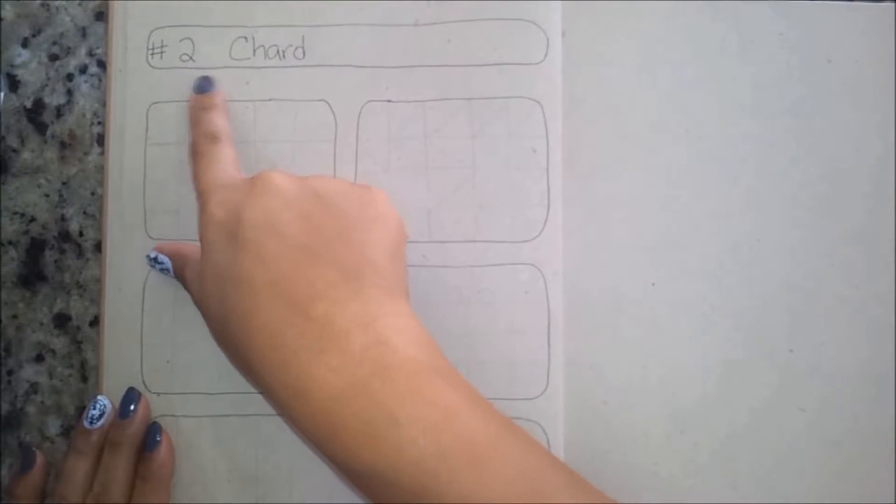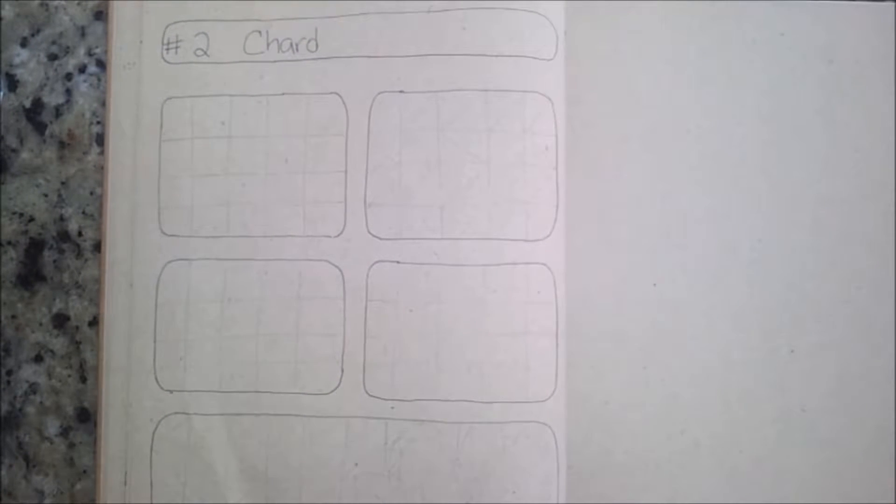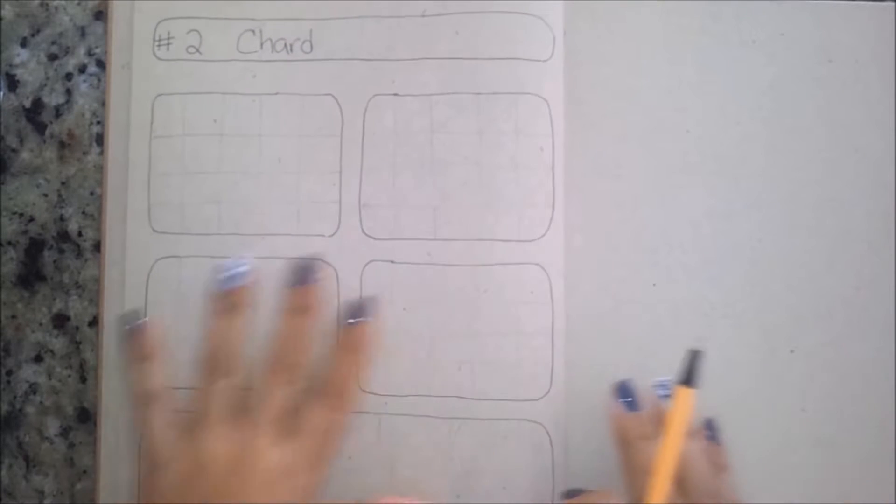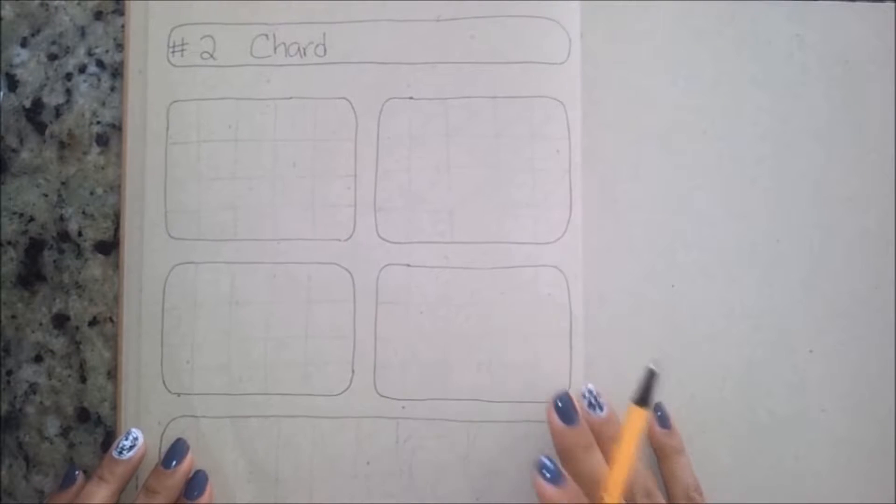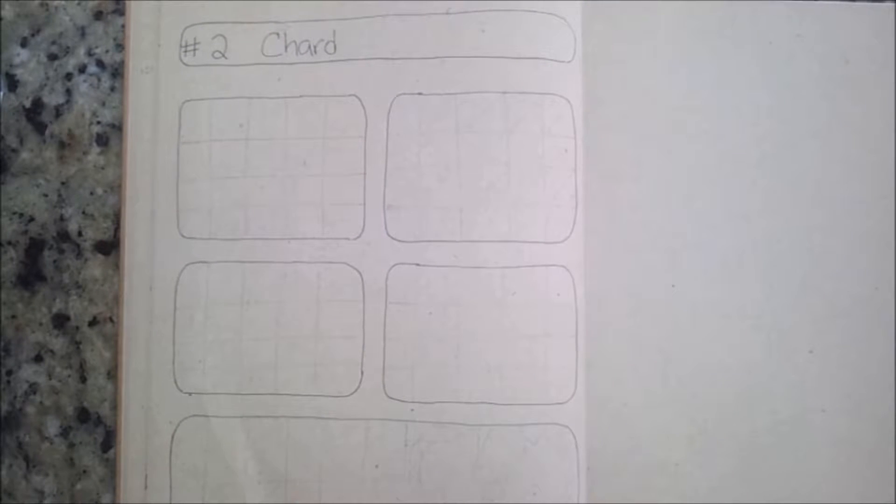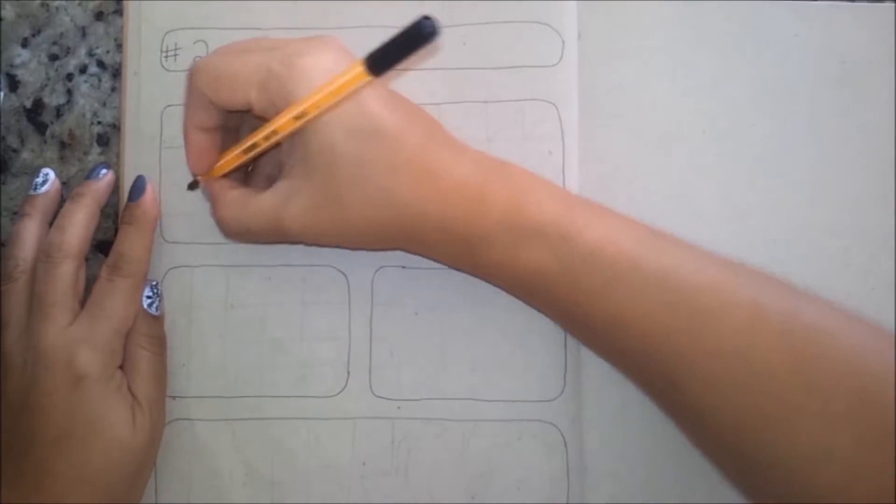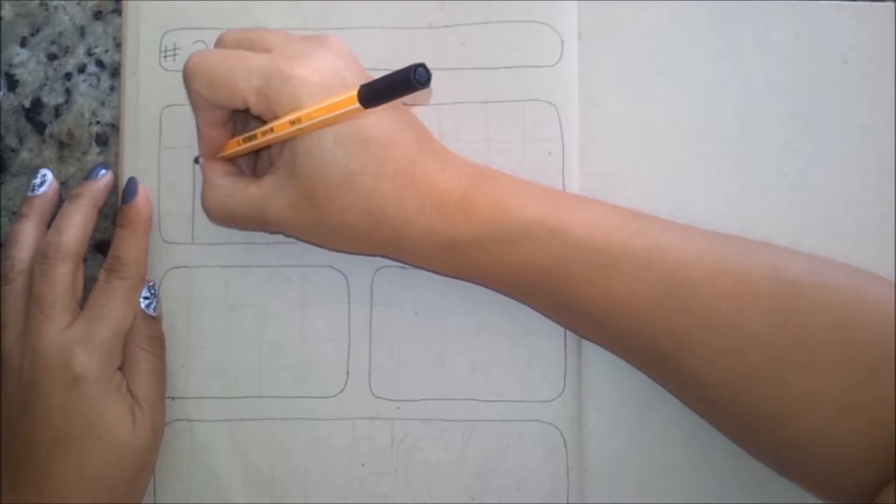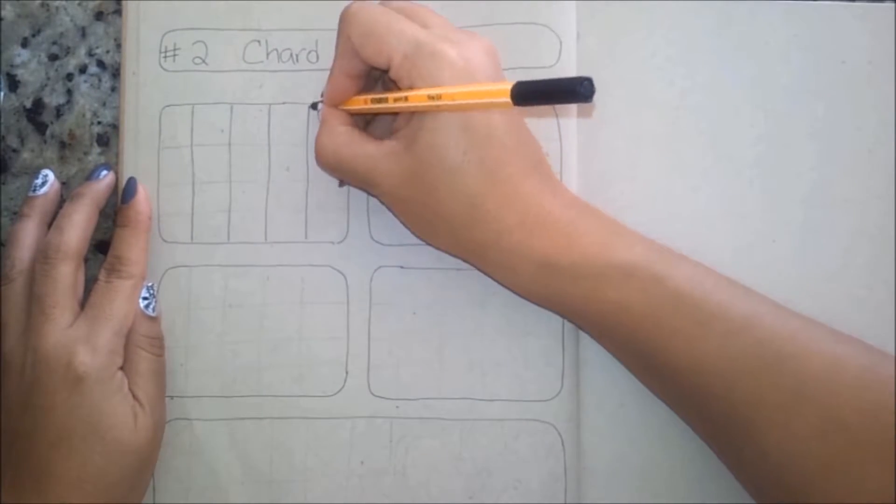Let's begin. Before we start, I just wanted to say that I am not a certified Zentangle teacher, and in the description box I'm gonna leave you the link to where I found the inspiration for this pattern. Let's begin. We're gonna start by making sort of a grid with vertical and horizontal lines like so.